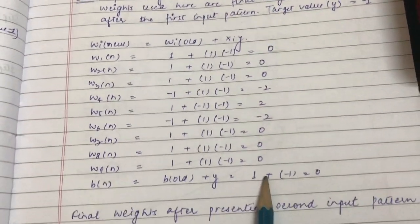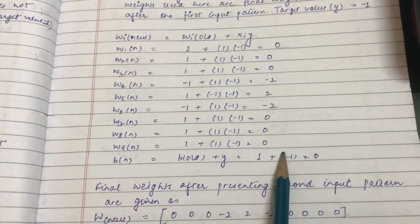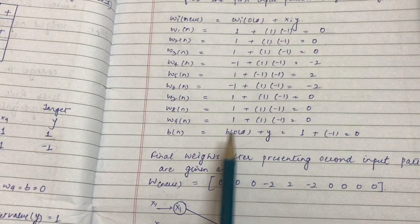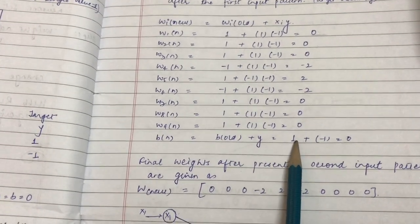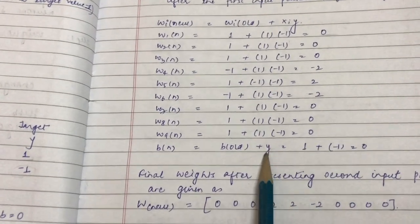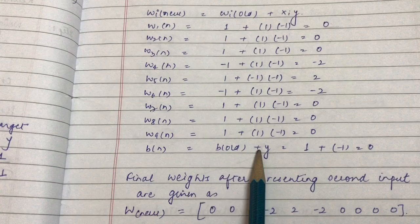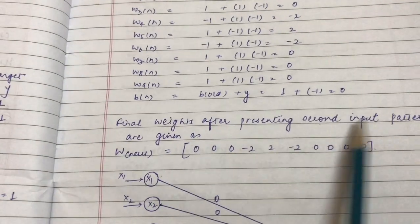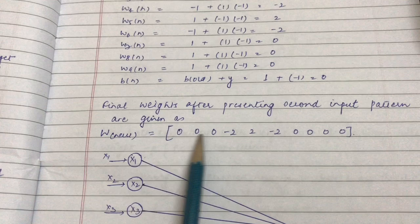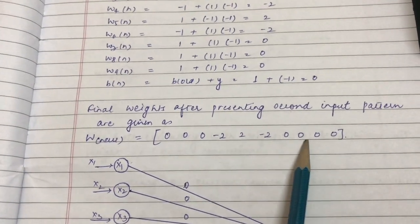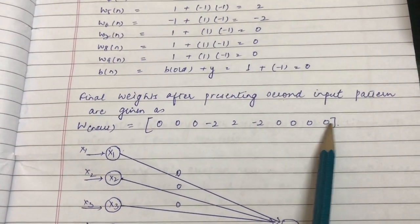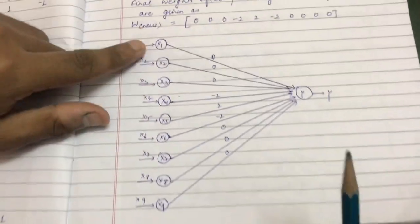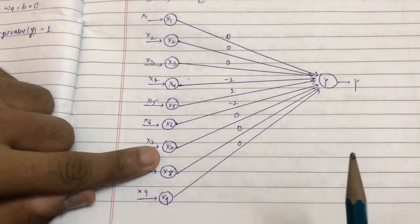After applying weight updation for all weights, the resulting values are: 0, 0, 0, minus 2, 2, minus 2, 0, 0, 0. For the bias: b_new = b_old + y = 1 + (minus 1) = 0. So the final weights after presenting the second input pattern are: w1 through w9 = 0, 0, 0, minus 2, 2, minus 2, 0, 0, 0, and bias = 0.